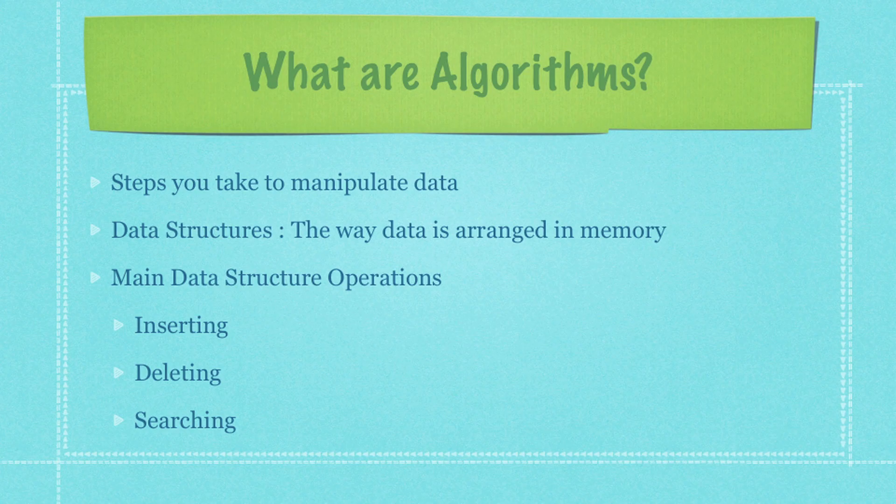So what exactly is an algorithm? It's just a series of steps you take to manipulate data. That's it — it's not that complicated. So what are data structures? They're just a way that data is arranged in memory. And today we're going to focus on the main data structure operations: inserting values, deleting values, and searching for values.